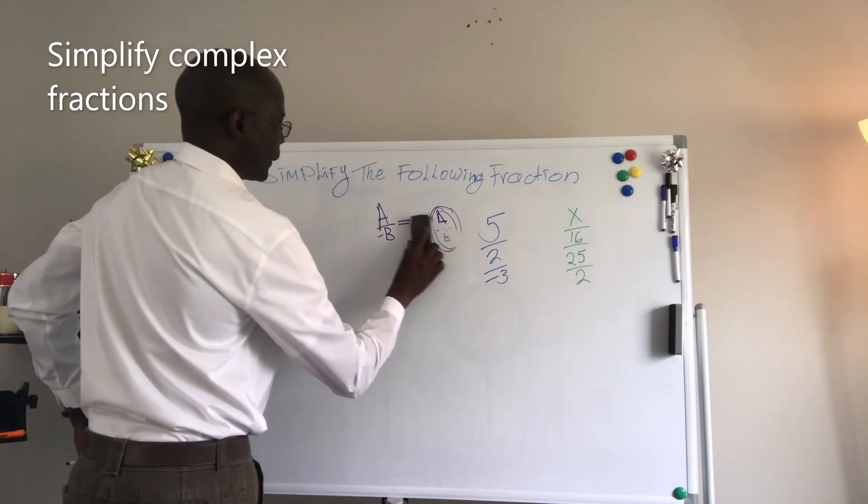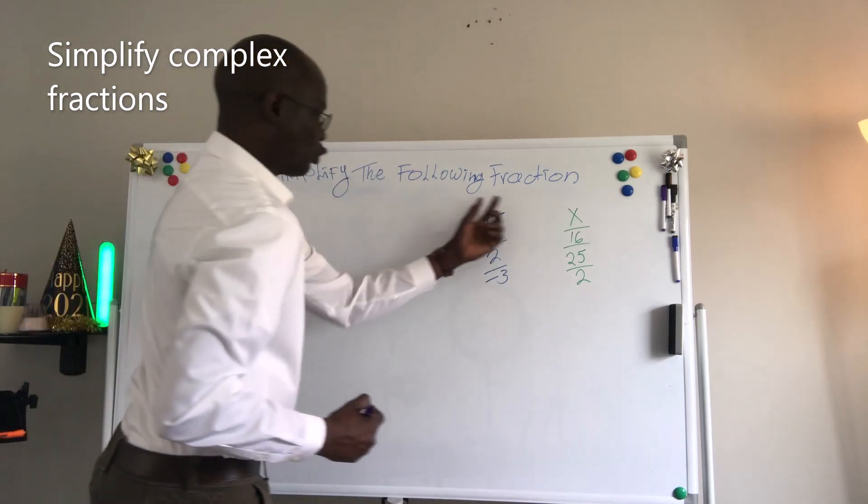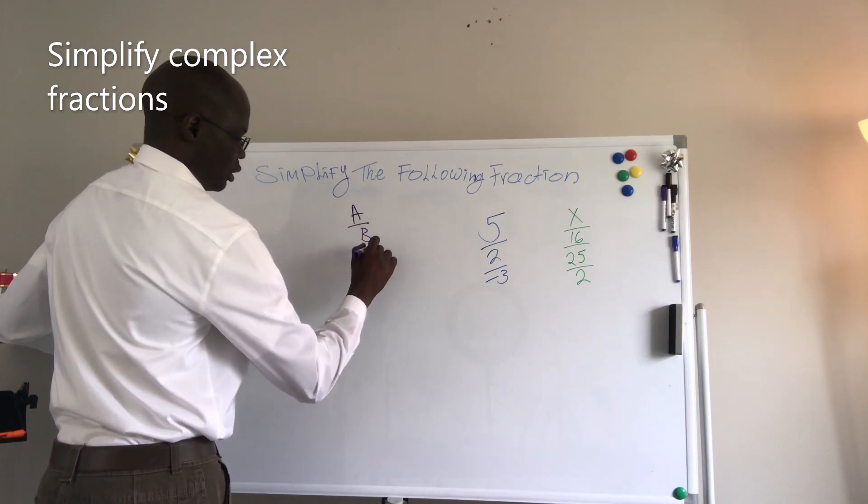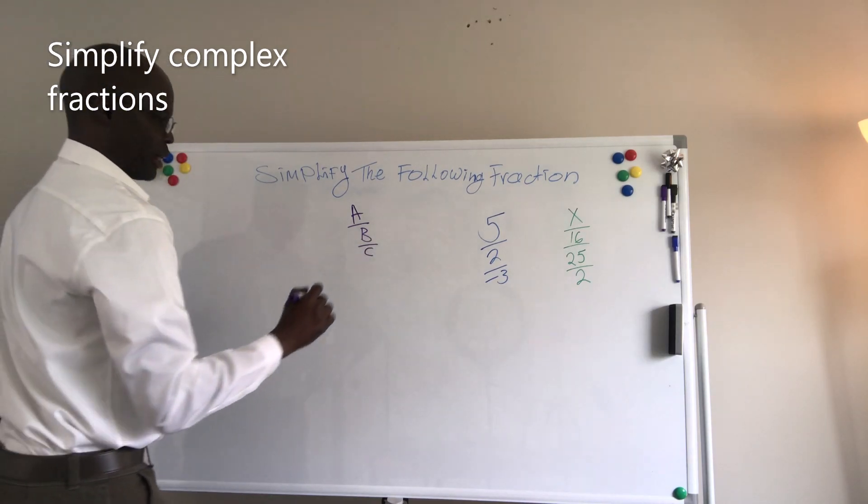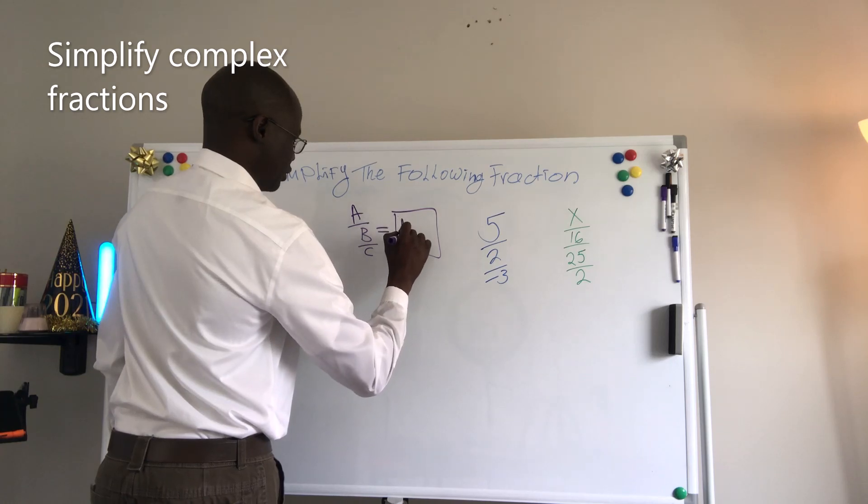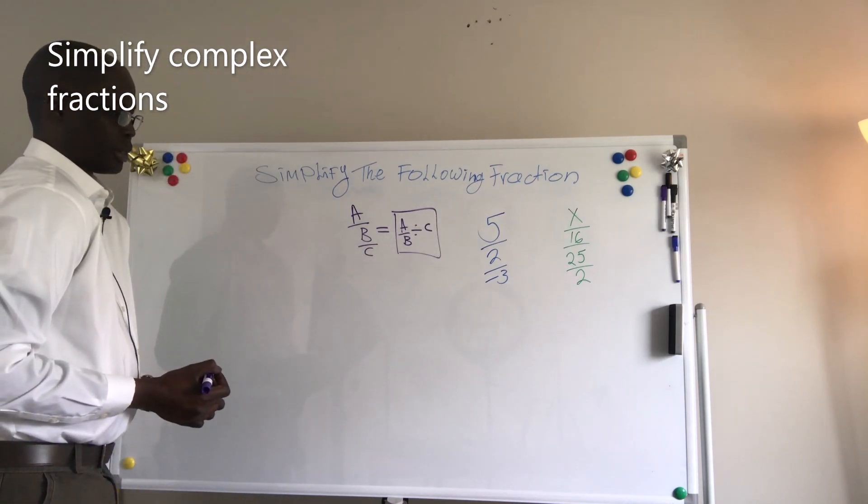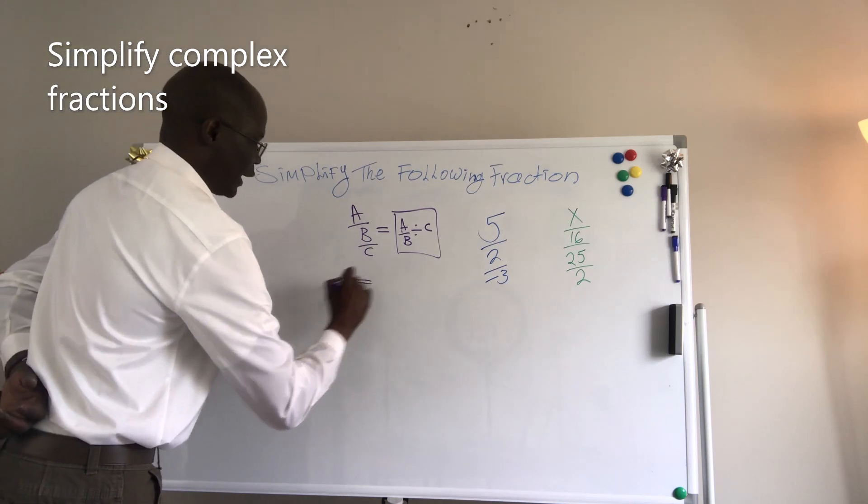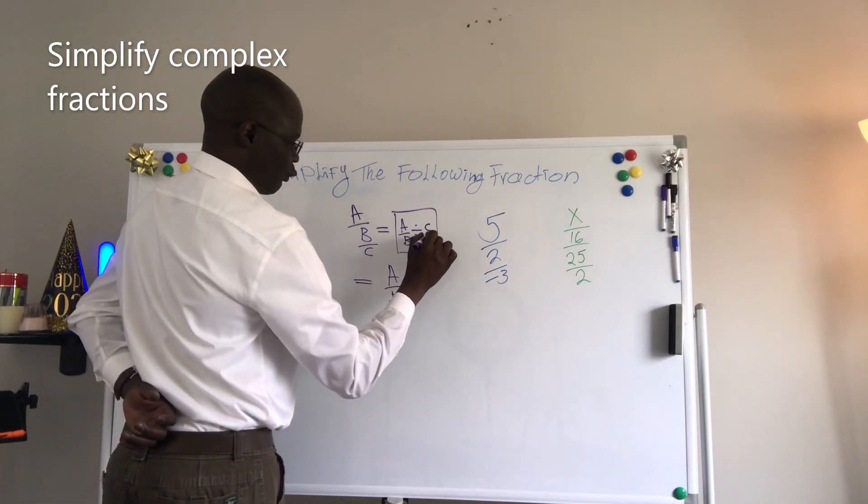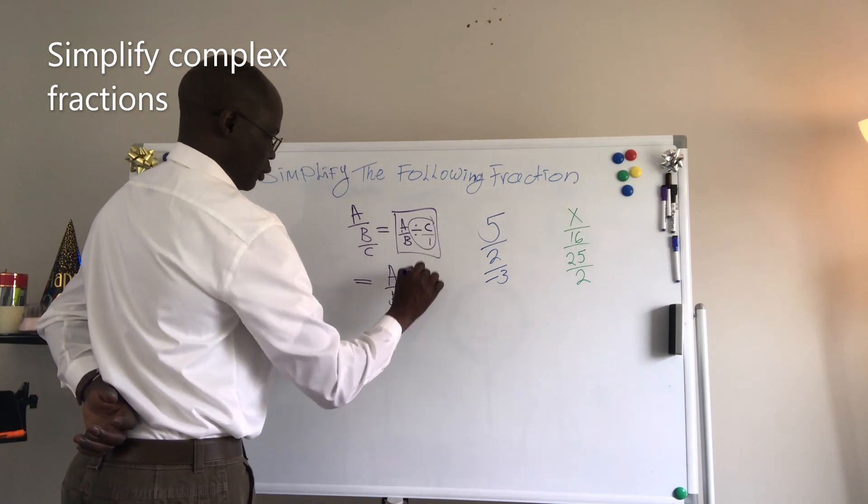In the complex fraction rules, the first one, what we have here is a divided by b divided by c. And the rule will look like this way: it will be a divided by b, and the whole thing divided by c. And then to simplify it, you still have a divided by b, and remember here you have one, we're not saying it but it's one. But after that it's going to change to times one over c.